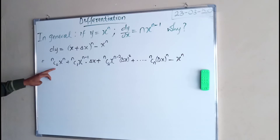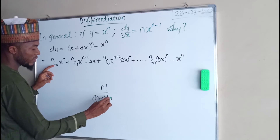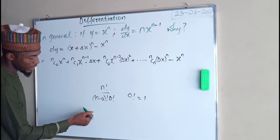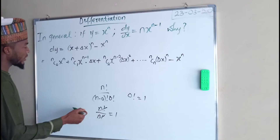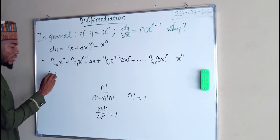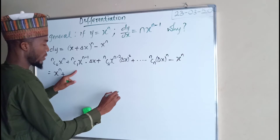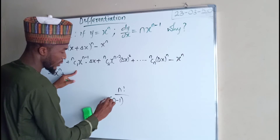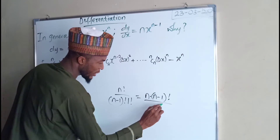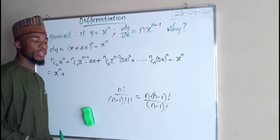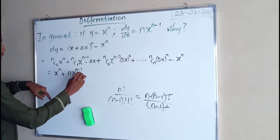In binomial expansion, nC0 equals 1, because it is n factorial over (n minus 0) factorial times 0 factorial, and 0 factorial equals 1, giving n factorial divided by n factorial, which equals 1. So nC0 times x to the power n gives us x to the power n. And nC1 equals n, since n factorial over (n minus 1) factorial times 1 factorial simplifies to n. So that term becomes n times x to the power n minus 1 times dx.